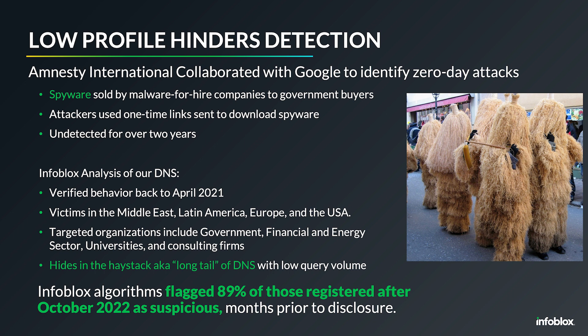The interesting thing about this kind of actor is that they're hiding in the low profile of DNS. They're very hard to detect — they only require a single DNS query to gain access to a device and maintain that access over time. What we found from the Amnesty International reporting was that Infoblox had already flagged 89% of the domains through our suspicious domains algorithms.